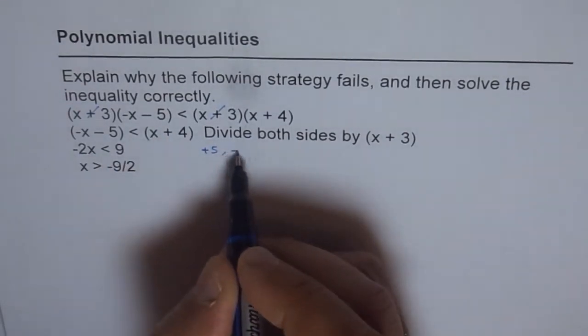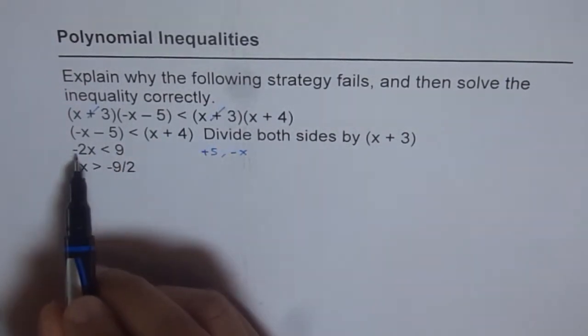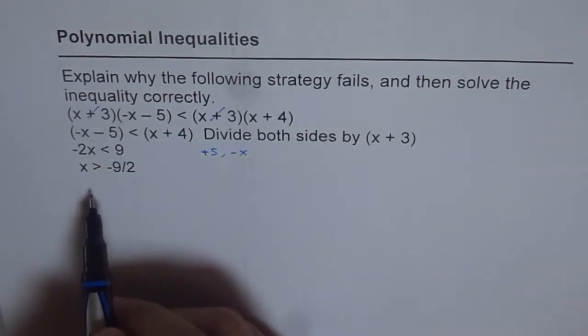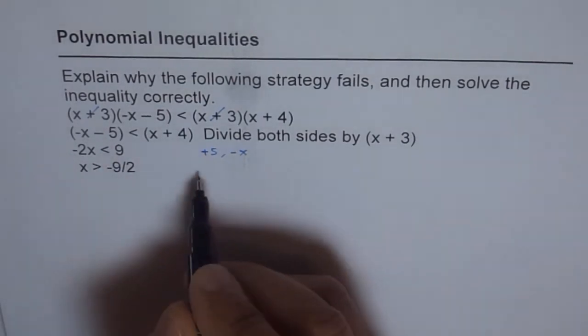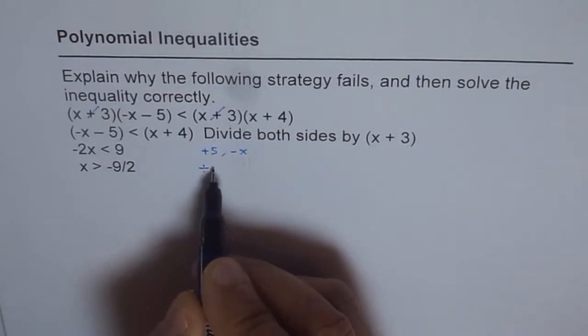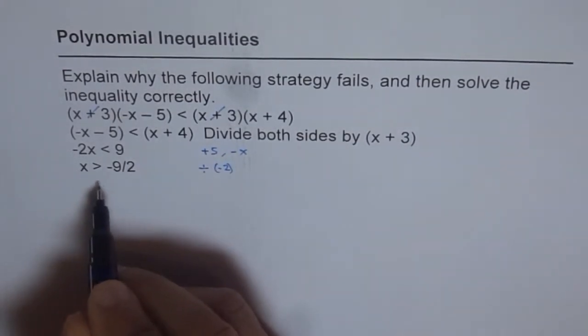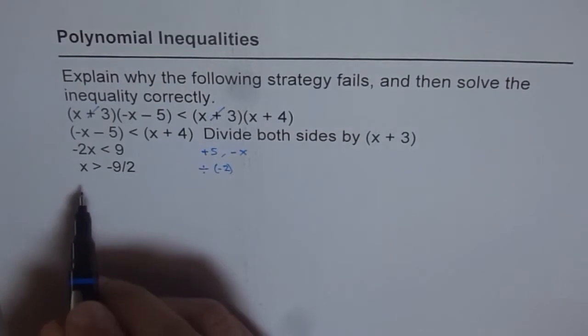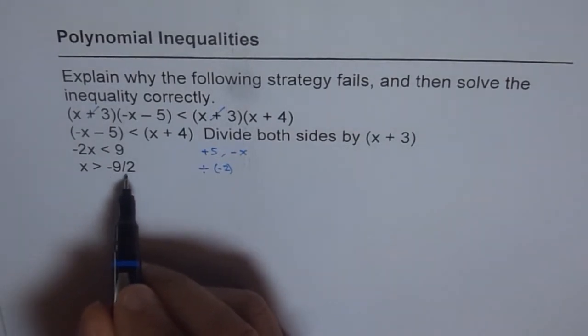and you do minus x both sides, correct? So you get this step, which is minus 2x is less than 9. Then you divide in this stage by minus 2. When you divide by minus 2, then you change your sign and then you divide by minus 2 and get this as your solution.